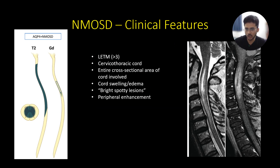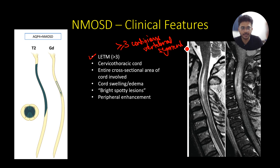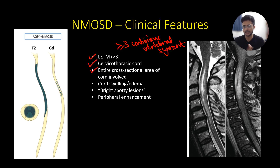Coming to spinal cord involvement, the patient presents with longitudinally extensive transverse myelitis — involvement of three or more contiguous vertebral segments. The site is predominantly cervical and upper thoracic cord. It tends to involve the entire cross-sectional area of the cord, both white and gray matter, and is associated with cord swelling and edema.